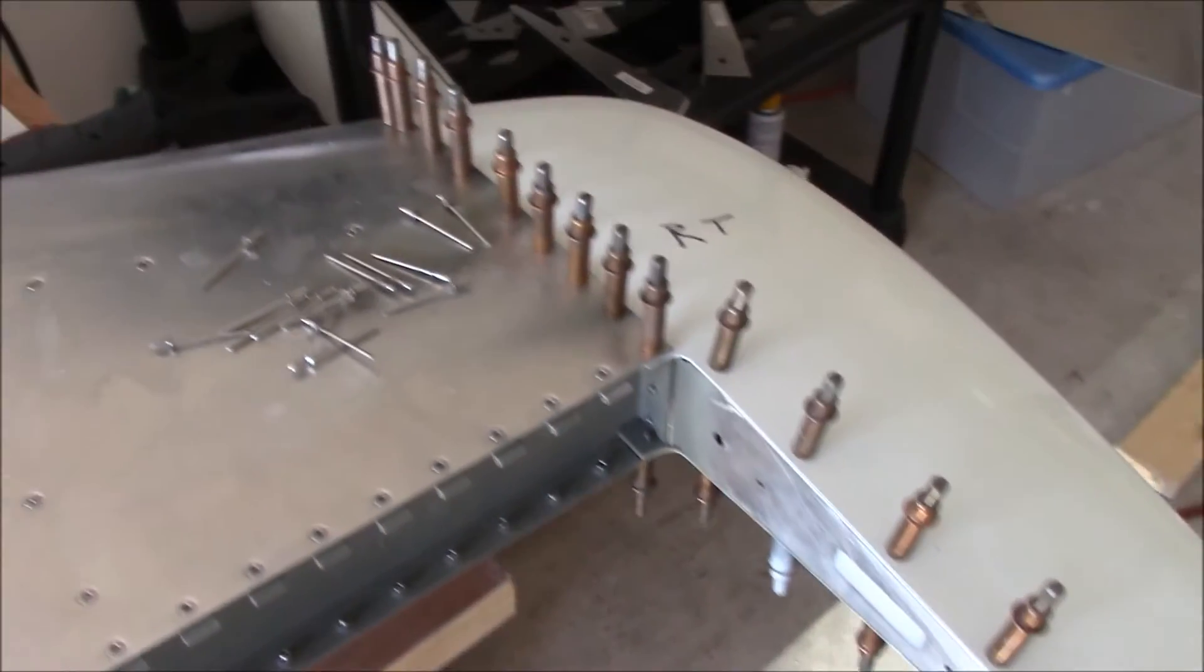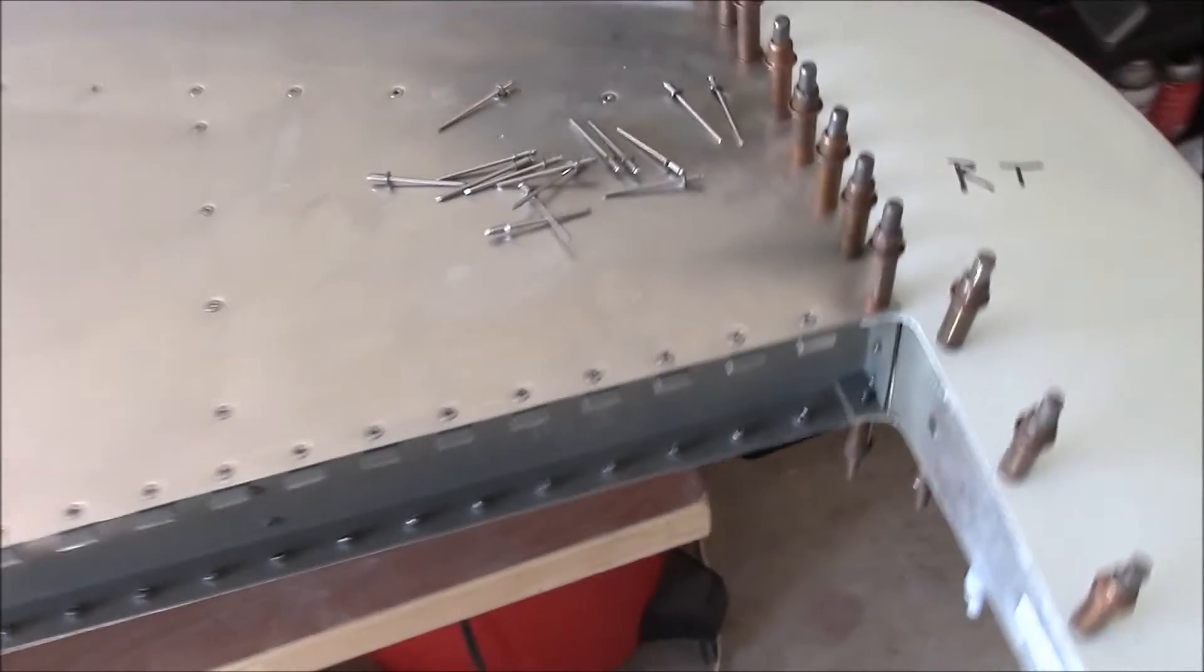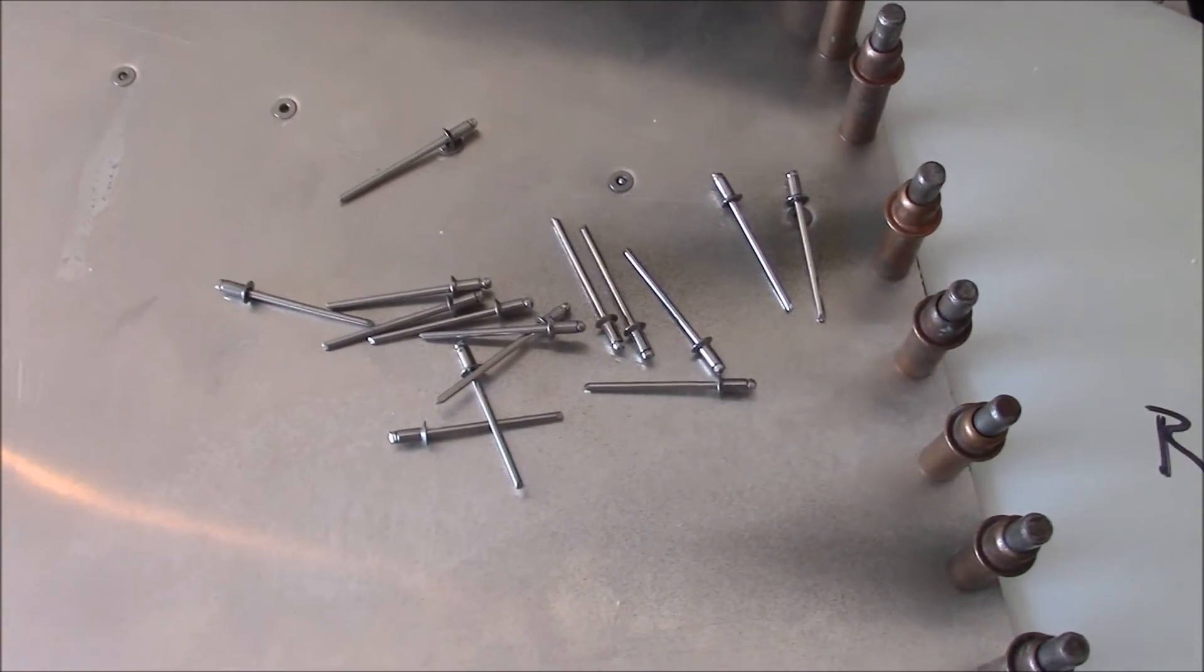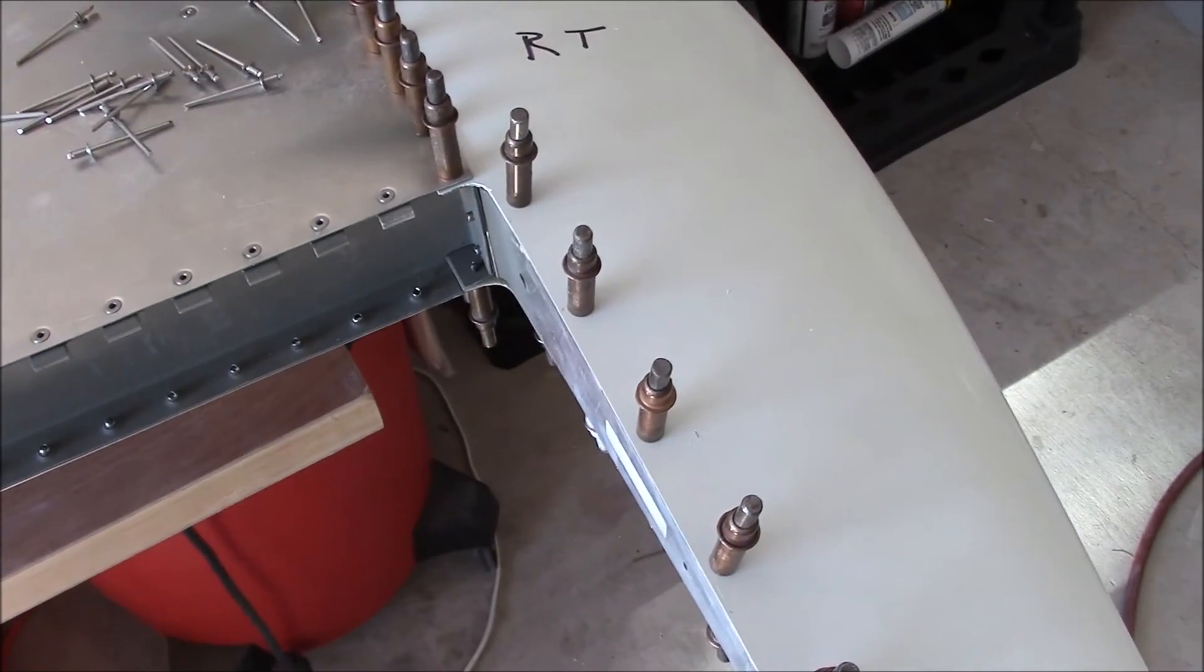There it is, countersunk and back in place. So now I'm going to go ahead and pull these 15 rivets for the top side here and then flip it over and pull the bottom ones.